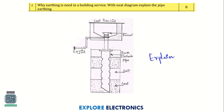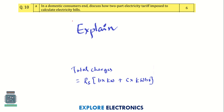Question 9C asks why earthing is needed in a building — first explain the necessity of earthing, and then explain pipe earthing by writing the diagram.